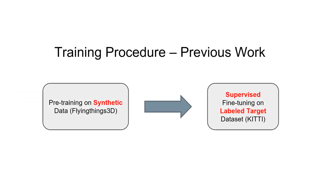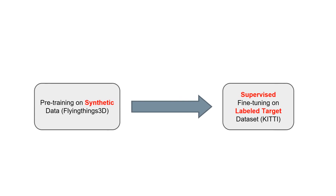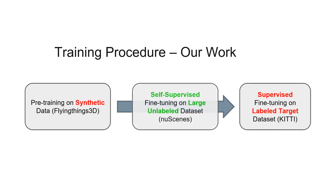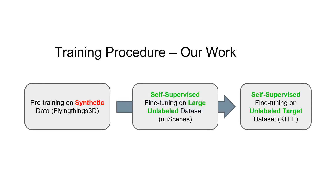When training scene flow algorithms, the models are commonly pre-trained using a large amount of synthetic data, such as the Flying Things 3D dataset. The resulting model is then fine-tuned on a small amount of annotated data using supervised training. Similarly, we start with the same synthetically pre-trained model.